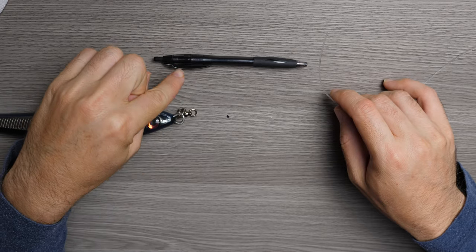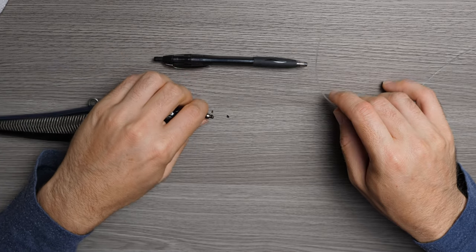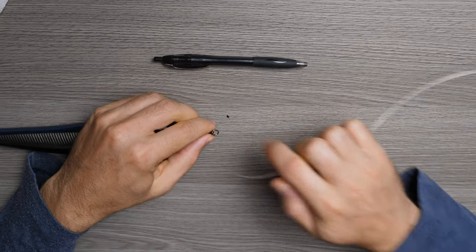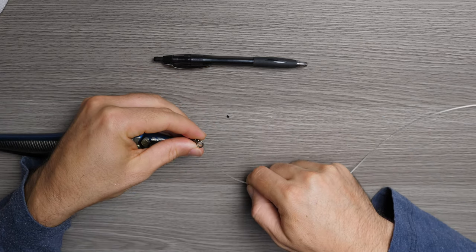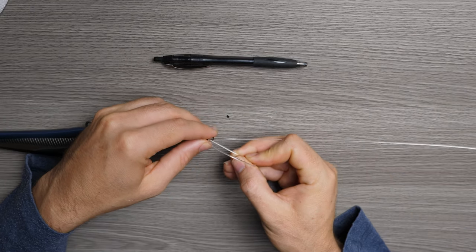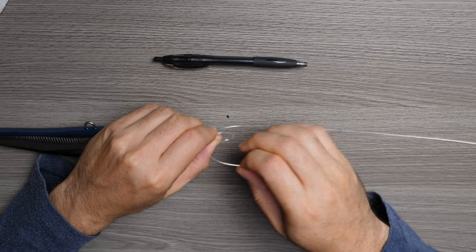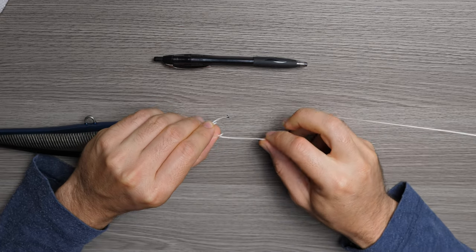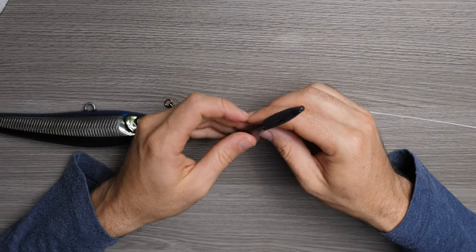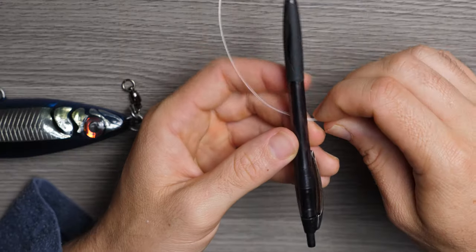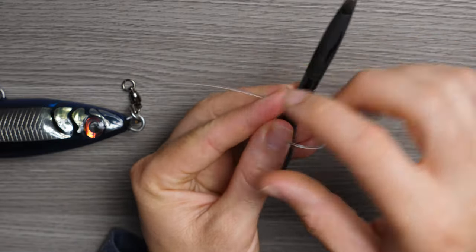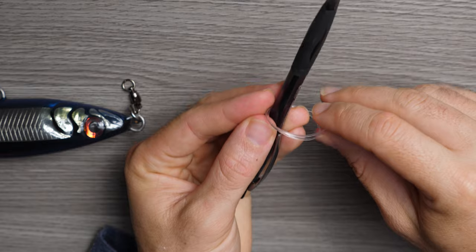We're going to be using a pen to demonstrate exactly what I'm doing on the eye of this ball bearing swivel. Basically what you're going to do is you're going to go through twice: once, twice, and you're going to pull this loop down tight. Now I'm going to take you back to this pen because it's really critical to catch what I'm doing right now. Let's assume this is the swivel that we're tying through. We're going to go over once and through the loop twice.